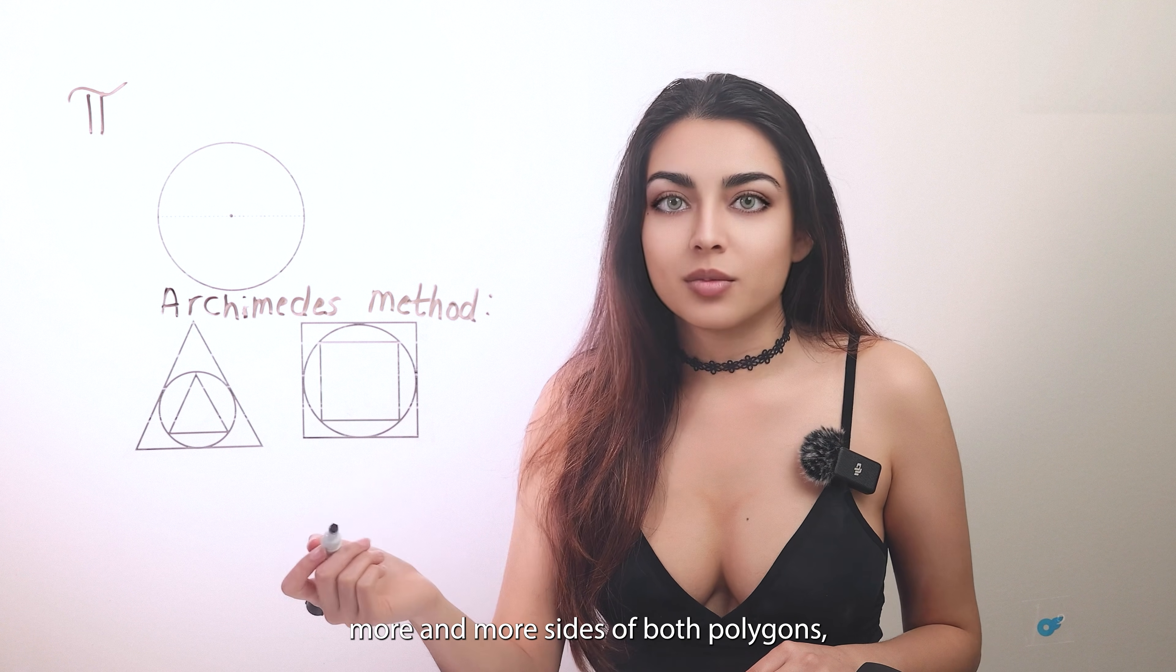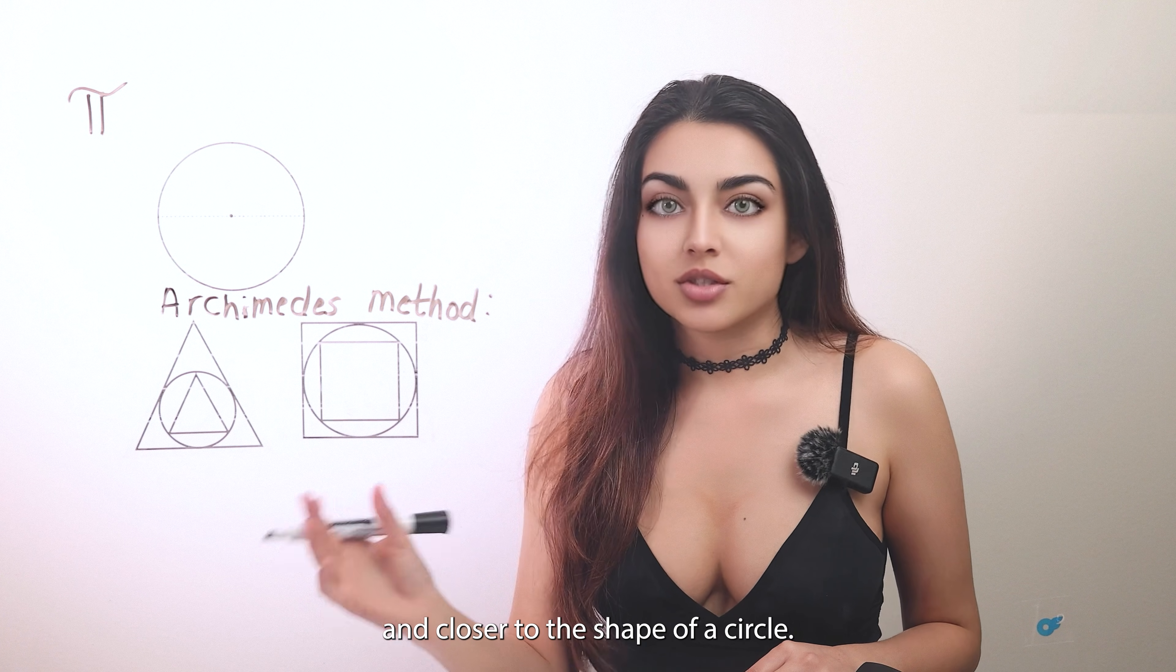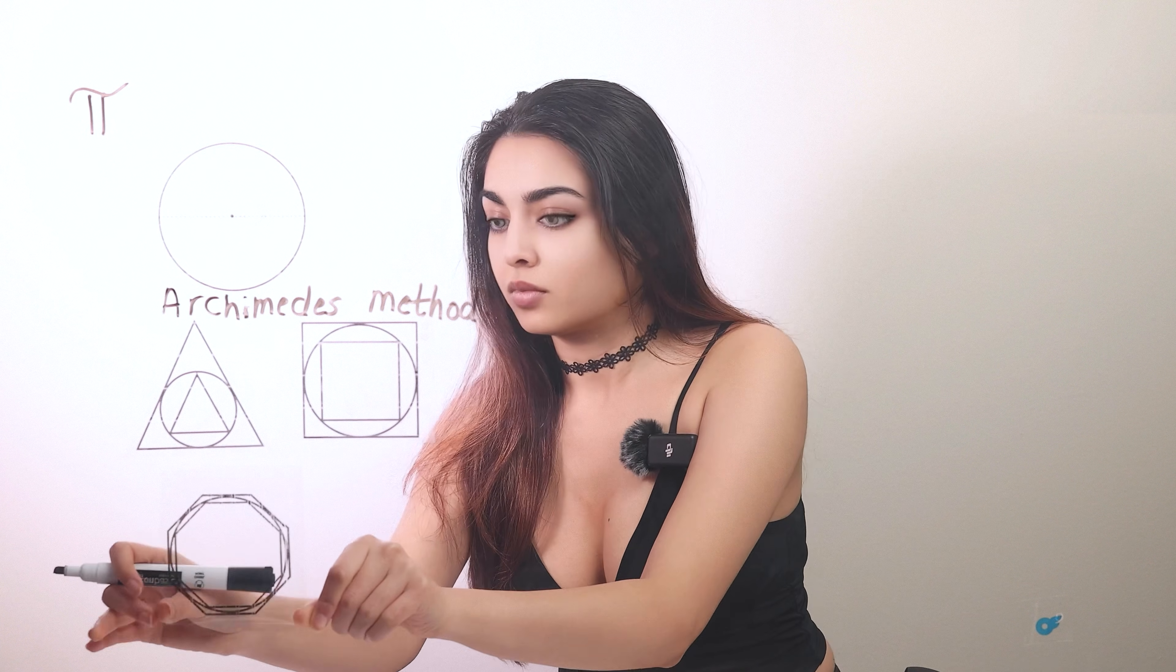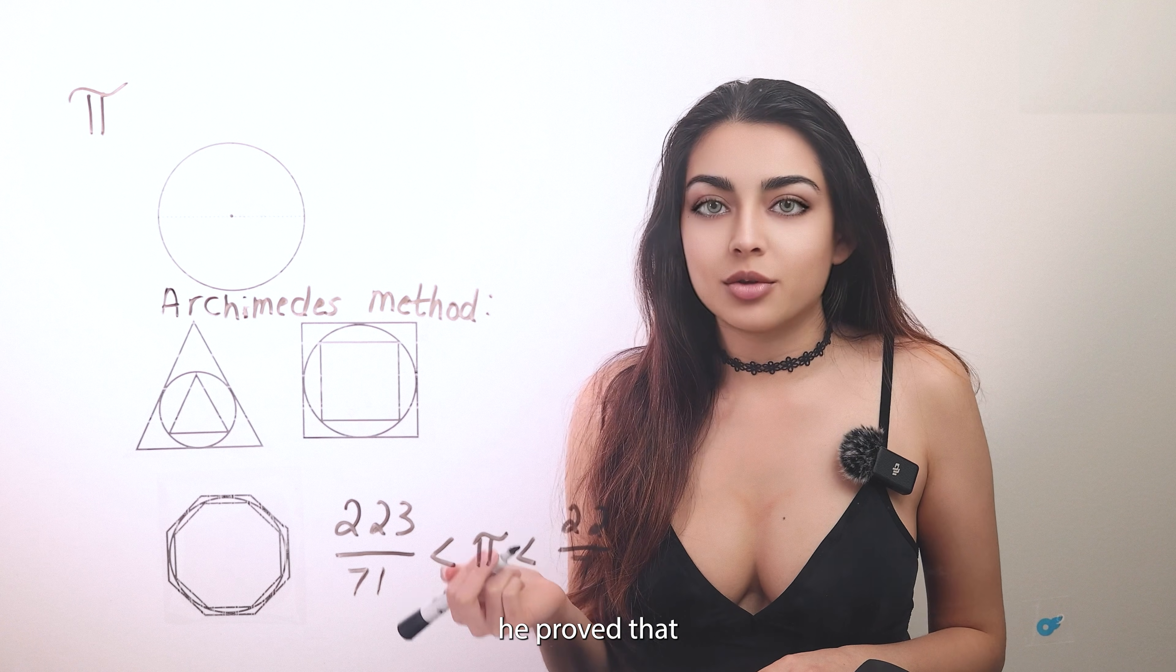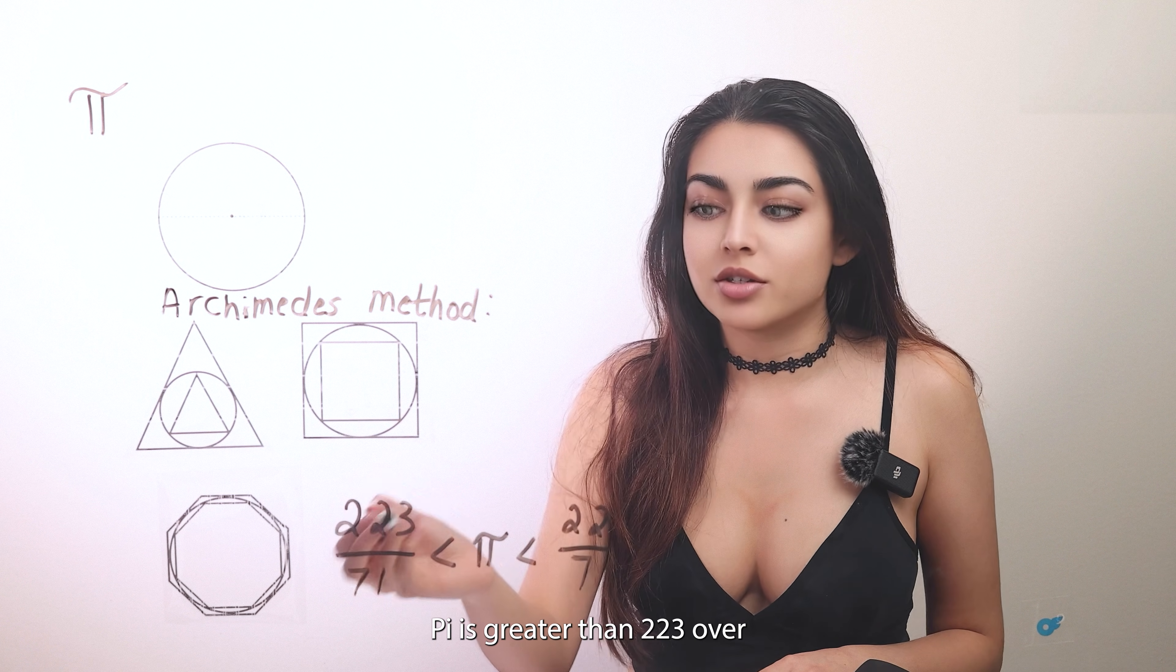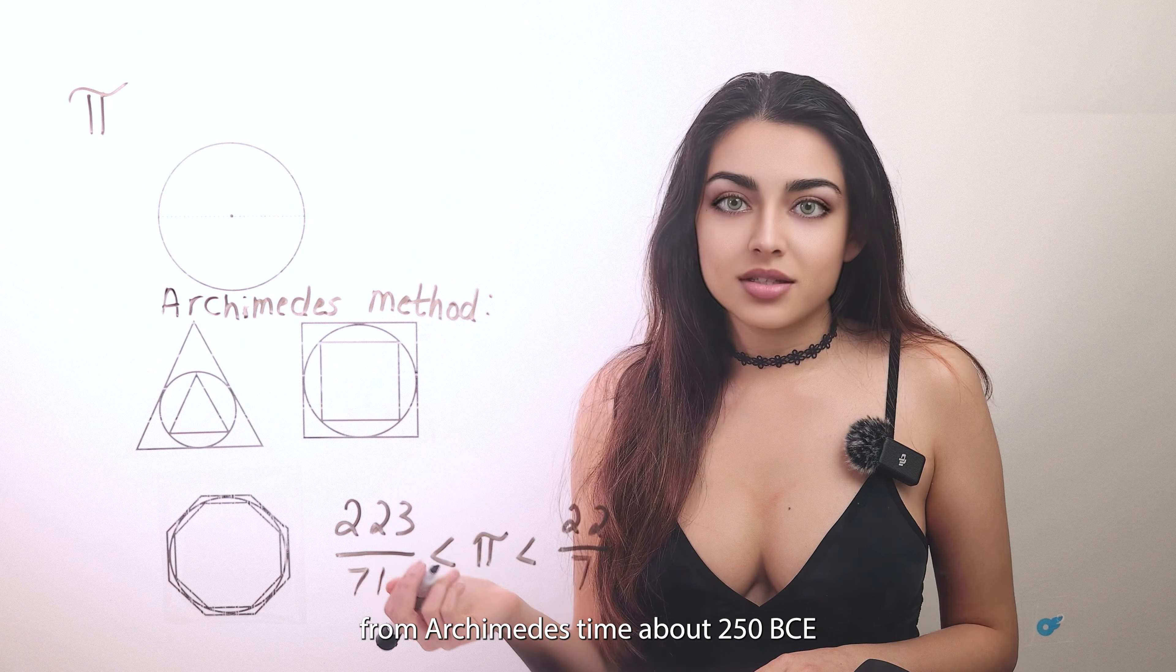Then, he continuously added more and more sides of both polygons, getting closer and closer to the shape of a circle. Having reached a 96-sided polygon, he proved that pi is greater than 223 over 71 and less than 22 over 7.